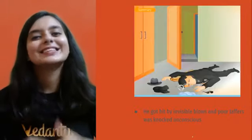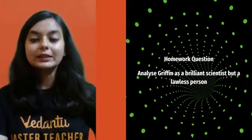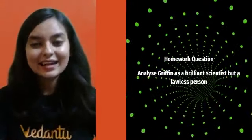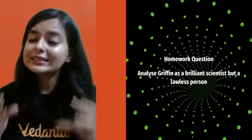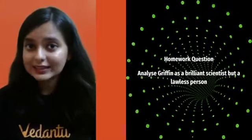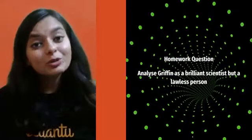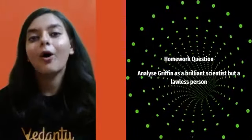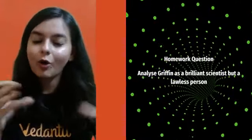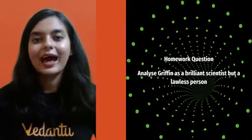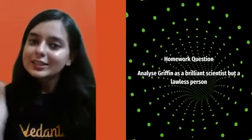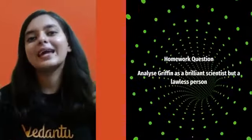In the next session we will start with the question answers. Your homework question is: Analyze Griffin as a brilliant scientist but a lawless person. Literature is the only medium of actually changing your opinion, molding your opinion, and making you farsighted. Do share this video so that more people become aware, we develop a better world, and start making the change from now.